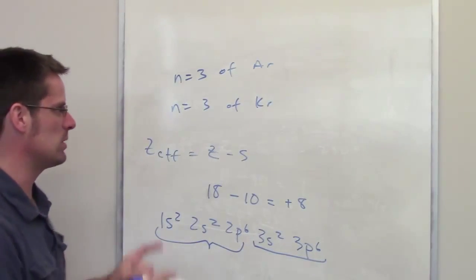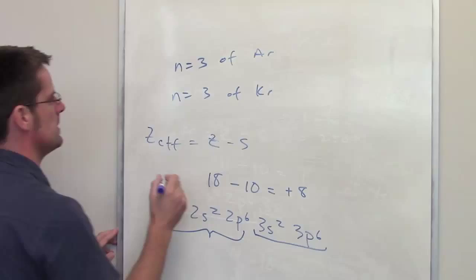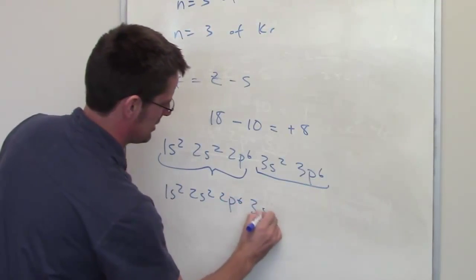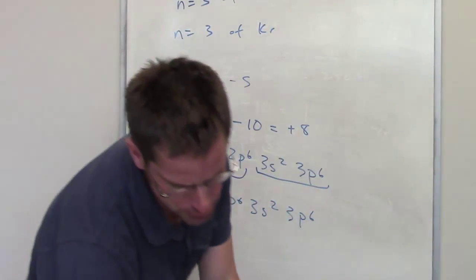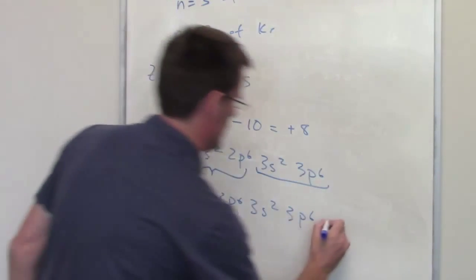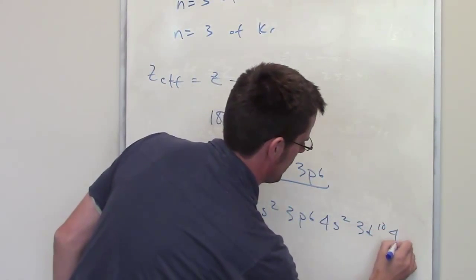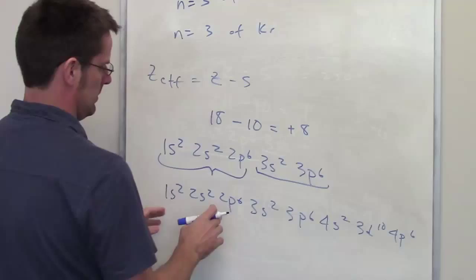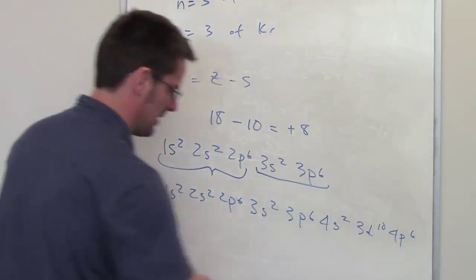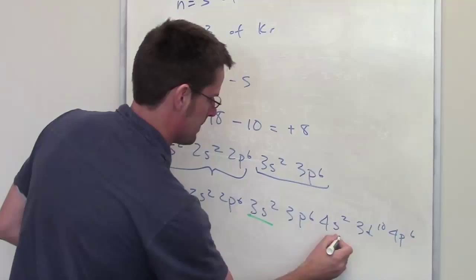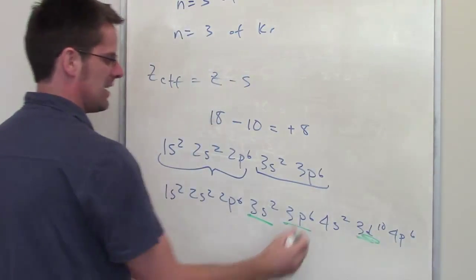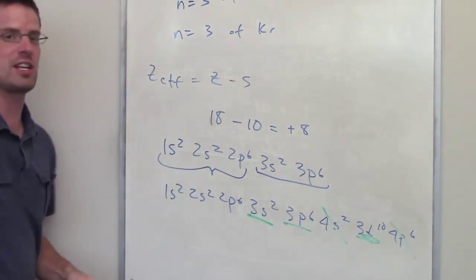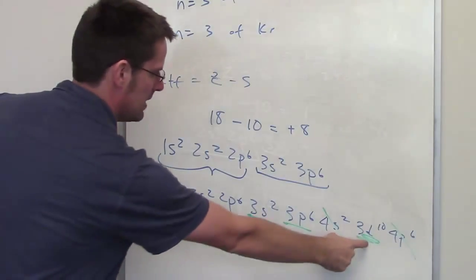Now for krypton, krypton has an electron configuration of 1s2 2s2 2p6 3s2 3p6 4s2 3d10 4p6, I believe. What's going on is it's asking us what the Z-effective is going to be for krypton's electrons in its level 3, so all of these guys.